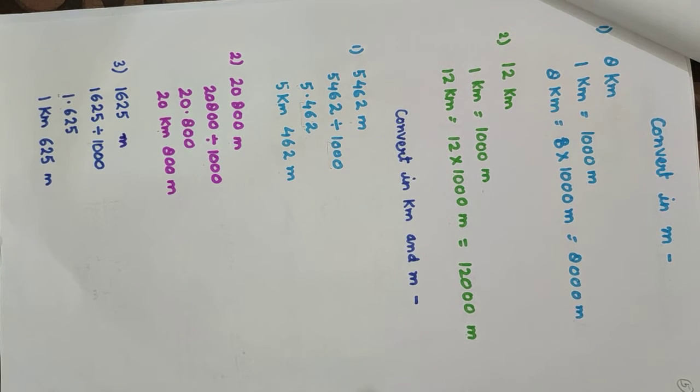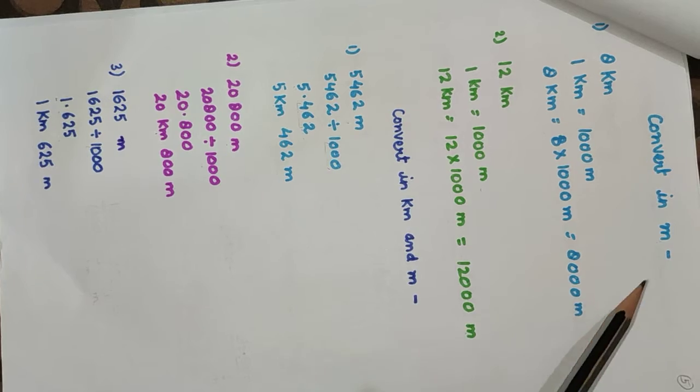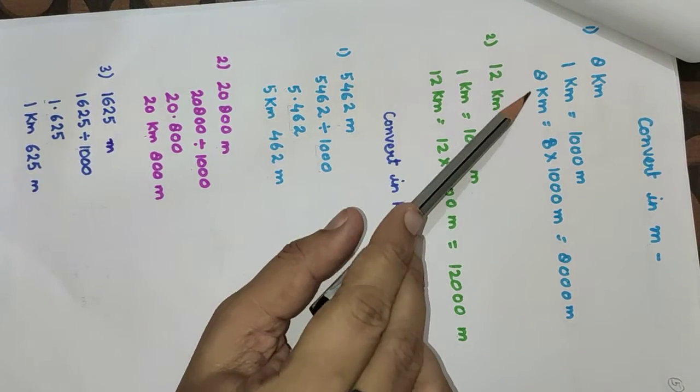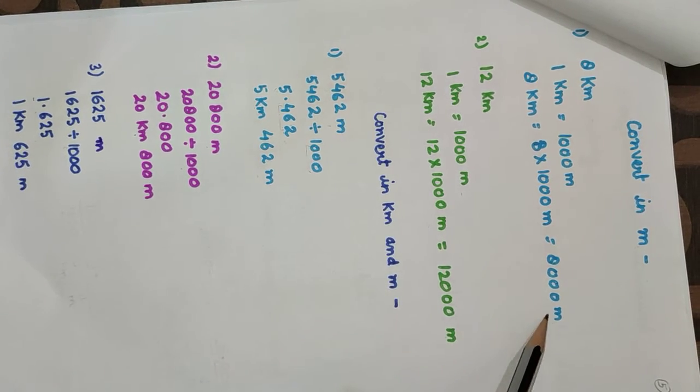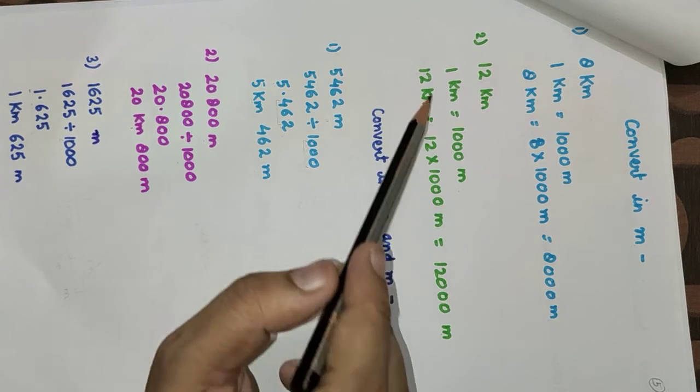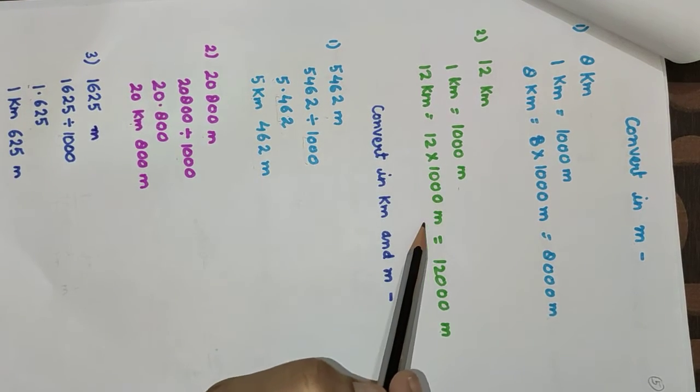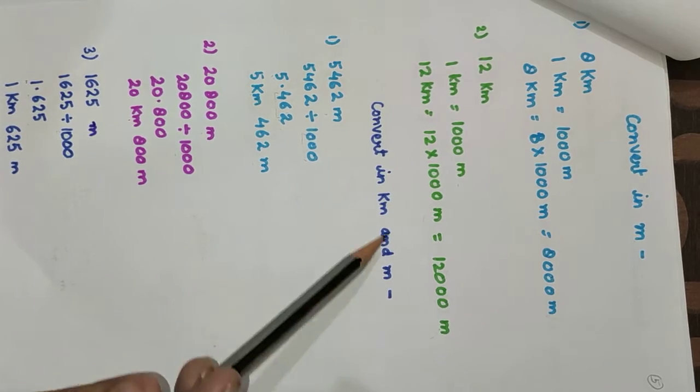Now convert kilometers to meters. Here is 8 kilometers. We have to convert it into meters. 1 kilometer equals 1000 meters, so 8 kilometers equals 8 multiplied by 1000 meters. The answer is 8000 meters. 12 kilometers equals 12 times 1000, which is 12,000 meters.